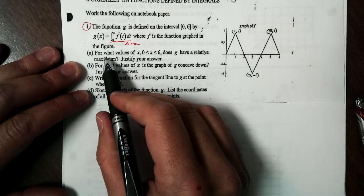So g of 0, well that's easy. That's just going to be the area from 0 to 0, f of t dt, so that's 0. So we've got the point 0, 0. I'm going to find g of 2. That's just my triangle. The area from 0 to 2, f of t dt, so that's just 1 half. The base is 2. The height is 1. So that's just 1. So we get 2, 1.